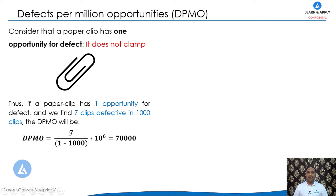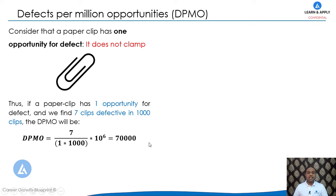DPMO equals the number of defectives divided by the number of opportunities multiplied by the number of clips observed. In this example, the number of defectives is 7, opportunity is 1, and we observed this in 1,000 clips. Since we are interested in defects per million opportunities, we multiply by 10 raised to 6, giving a result of 70,000.